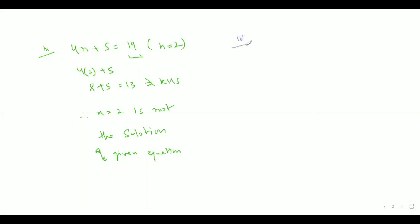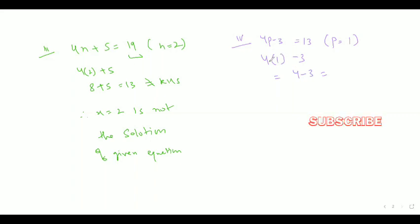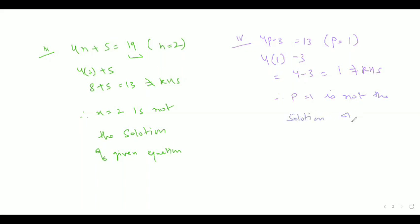The fourth part is given as 4P minus 3 equal to 13, where P is equal to 1. We put 1 instead of P: 4 times 1 minus 3, that is 4 minus 3, which equals 1. This is not equal to RHS, which is 13. Therefore, P is equal to 1 is not the solution of the given equation.